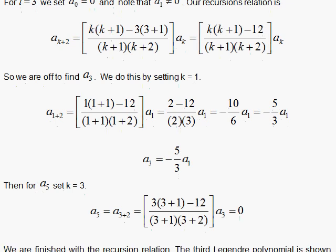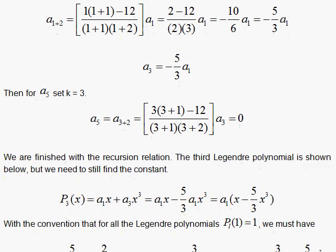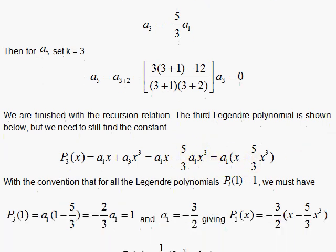and we can write the Legendre polynomial down here as a1x plus a3x cubed, a1x minus 5 thirds a1x cubed with the substitution, pull out the a1, and give the condition that x equals 1 must give a polynomial equal to 1. When you work it out, let's do it.